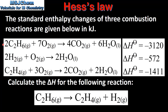In the first equation we have the combustion of two moles of ethane to produce carbon dioxide and water. The enthalpy change for this reaction is negative 3120 kilojoules. In the second reaction we have the combustion of two moles of hydrogen to produce two moles of water. The enthalpy change for this reaction is negative 572 kilojoules.